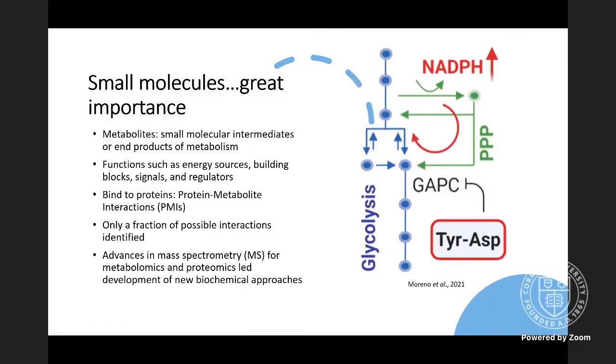So what are metabolites? Metabolites are small molecular intermediates or end products of metabolism. Metabolites play many important roles in cells as energy sources, building blocks, but also as signals and regulators. To exert their many functions, metabolites bind to proteins. Related protein metabolite interactions, or PMIs, can be of metabolic or regulatory importance.